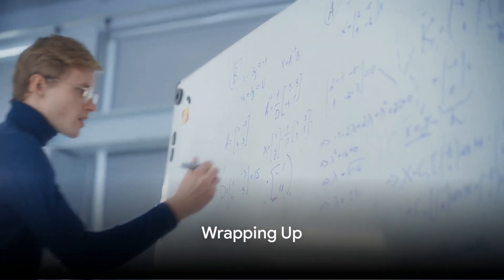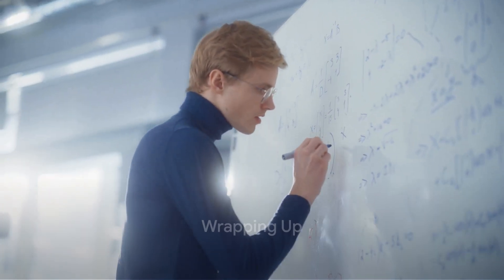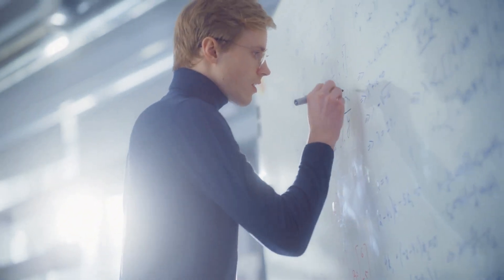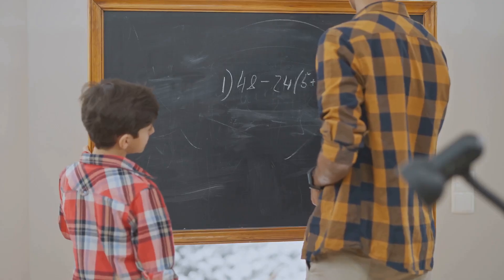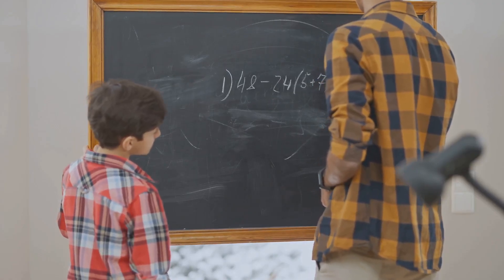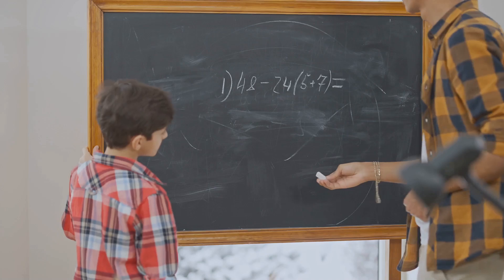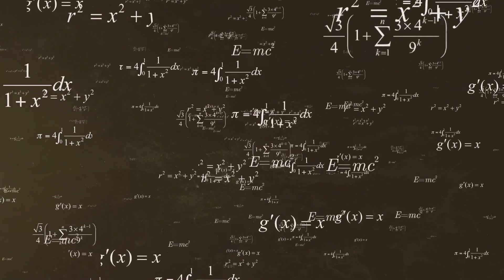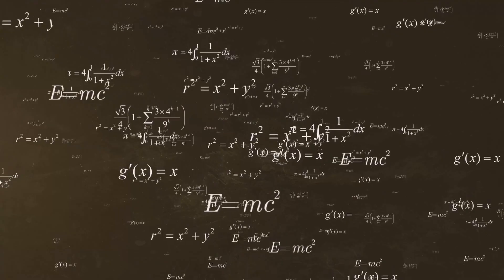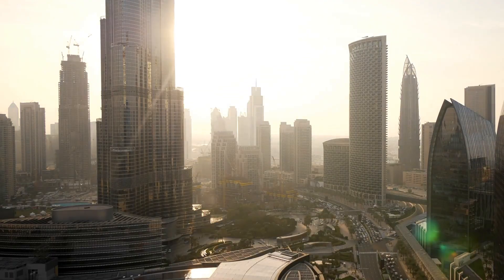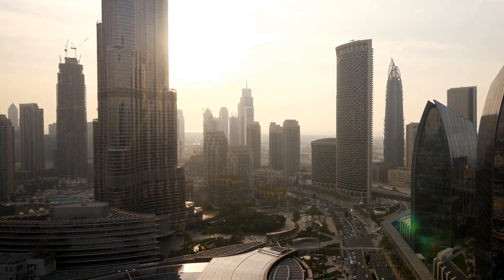We've journeyed through centuries of mathematical history today, all centered around one unsolved problem. The Goldbach conjecture, a puzzle that has held mathematicians in its grip since 1742. It's a simple idea, really. Every even number greater than 2 can be expressed as the sum of two prime numbers. Yet despite its simplicity, it has proven to be a tough nut to crack.